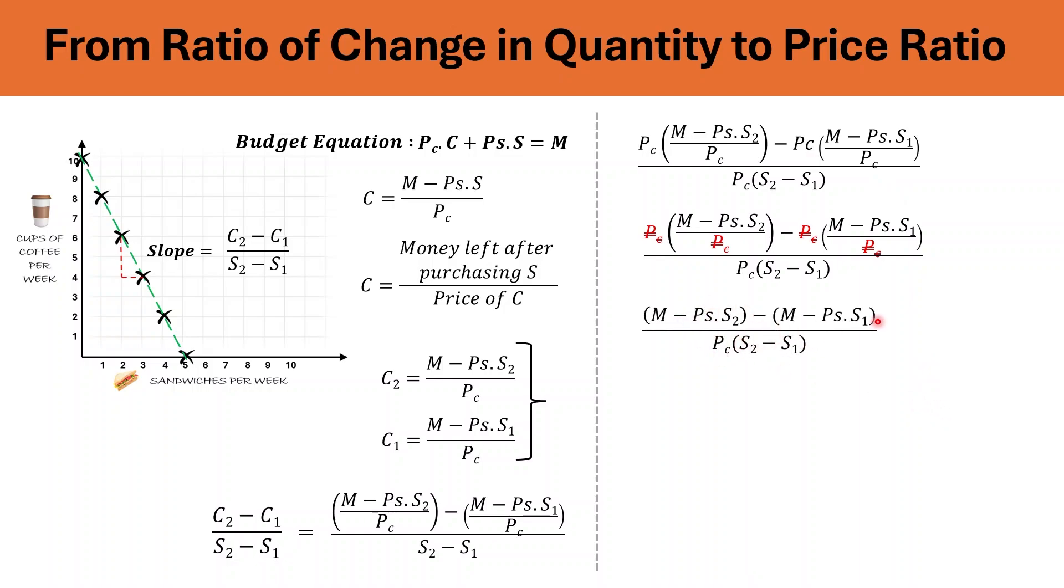After this, we are going to open the brackets and we get M minus PS into S2 minus M plus PS into S1, and the denominator remains the same. Now, here we can easily cancel M plus M and minus M, and we are left with this. Here, we can take the common factor PS out. So, we are left with S2 minus S1 in the numerator as well. Then, we can easily cancel this, and your final answer left is slope of the price ratios.